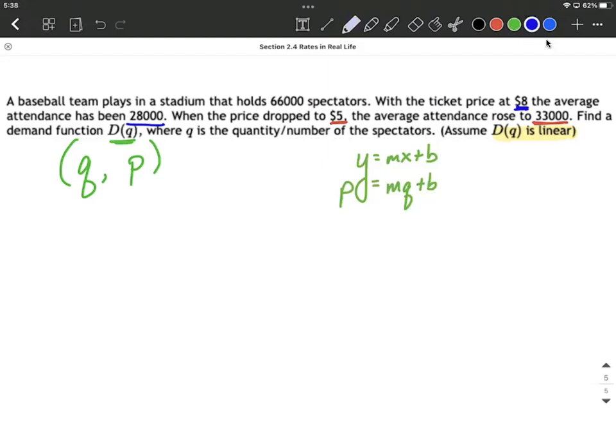To get the equation of a line, a linear function, it's important that we go ahead and find the slope of this line. To do so, let's look at ordered pairs. So the first one I noticed is we had a quantity of 28,000, a value for Q, went with a price, P of 8.